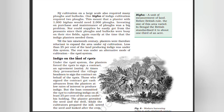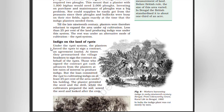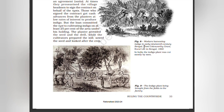The rest was under an alternative mode of cultivation: the ryoti system. Under the ryoti system, the planters forced ryots to sign a contract and agreement. At times they pressurized the village headman to sign the contract on behalf of the ryots. Those who signed the contract got cash advances from the planters at low rates of interest to produce indigo. But the loan committed the ryot to cultivating indigo on at least 25% of the area under his holding. The planter provided the seed and the drill, while the cultivators prepared the soil, sowed the seed, and looked after the crop.